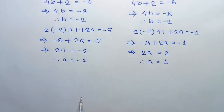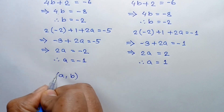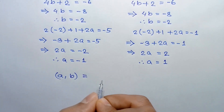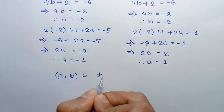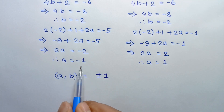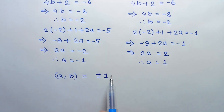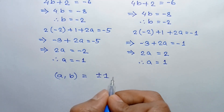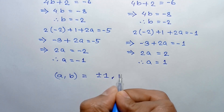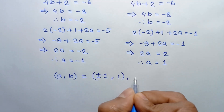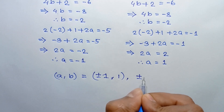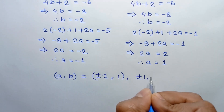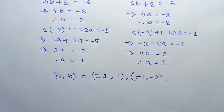So finally, the solutions are: when a = ±1, the value of b = 1; and when a = ±1, the value of b = −2. These are the four integer solutions of this equation. If you like this video please subscribe to my channel, thanks for watching.